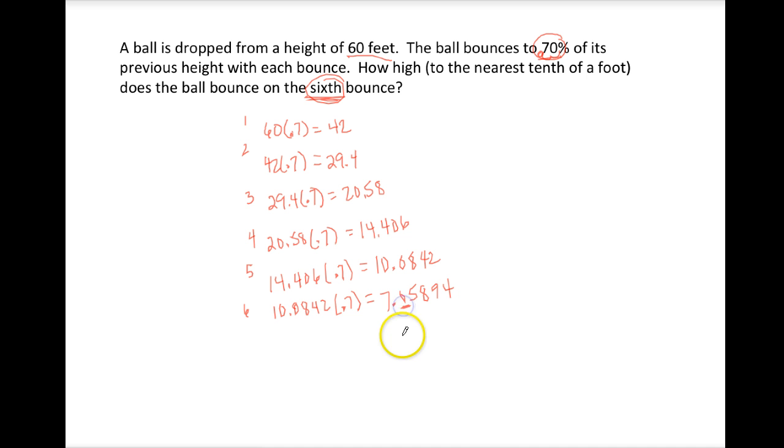They wanted it rounded to the nearest tenth, which would have us rounding to 7.1. So we know our answer is that on the sixth bounce, it's going to bounce 7.1 feet high.